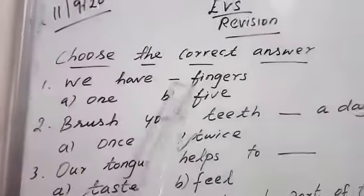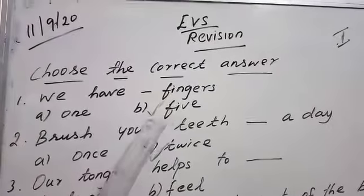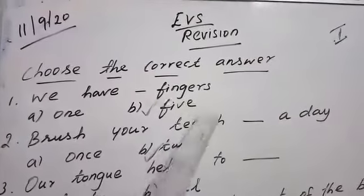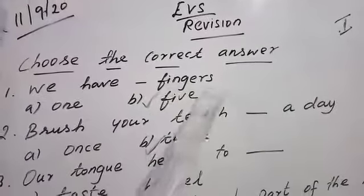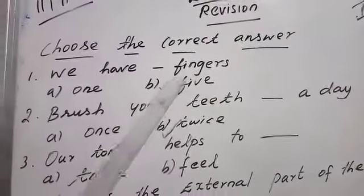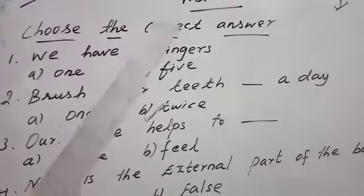We have dash fingers. How many fingers do we have? Five fingers. F-I-V-E. So we have dash fingers, F-I-N-G-E-R-S fingers. We have five fingers. You have to take five, you have to choose and write it down.